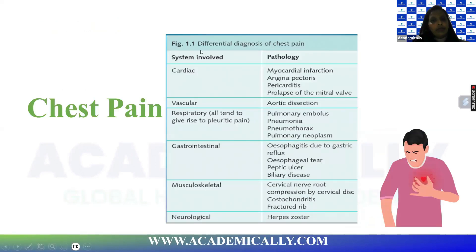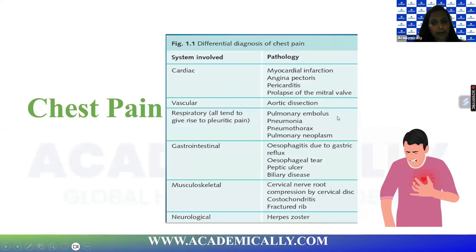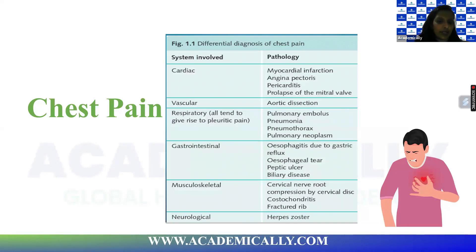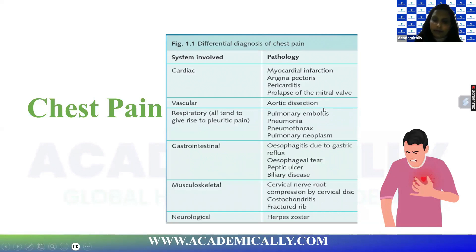As cardiac causes: myopericarditis, angina, MI, mitral valve prolapse, aortic dissection, and pulmonary embolism. Respiratory causes include pneumonia, pneumothorax, and pulmonary neoplasms. Gastrointestinal causes include esophagitis, gastroesophageal reflux, esophageal tears, peptic ulcers, and biliary disease. Any musculoskeletal problems and even neurological issues can also present as chest pain.